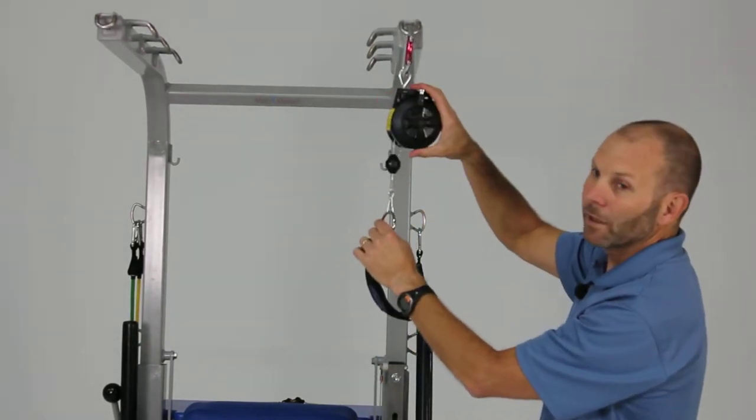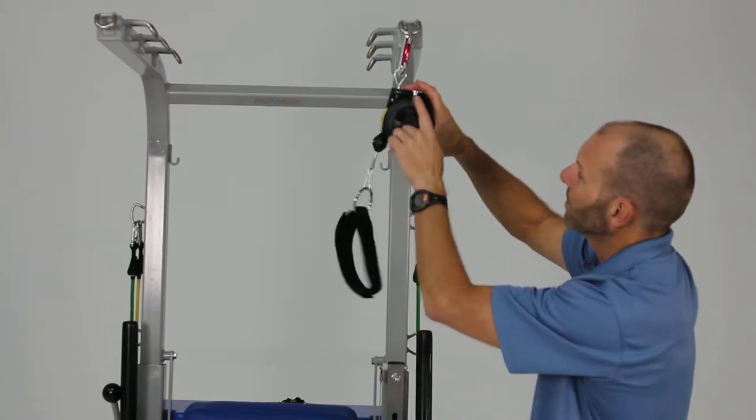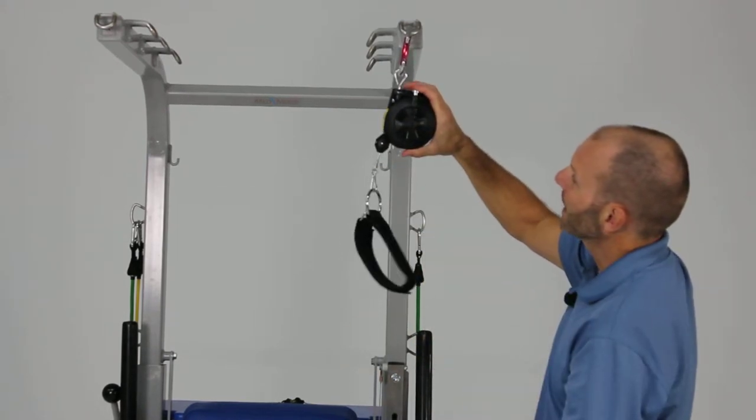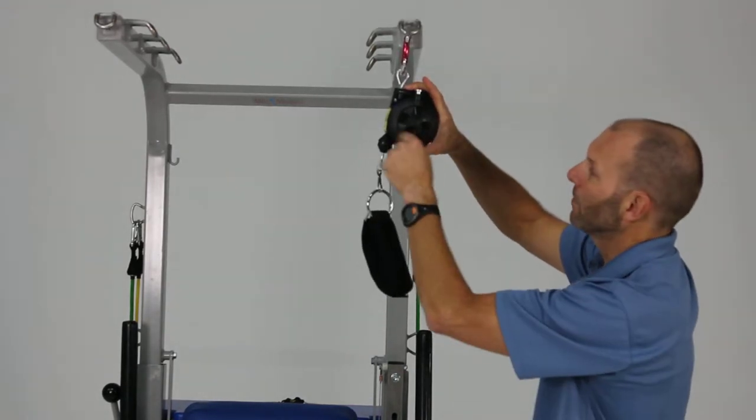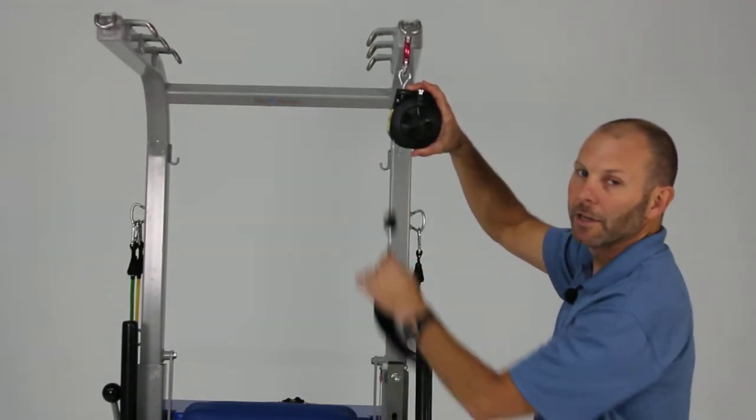If you want to reduce the amount of support or assistance, you simply press on the little silver tab button up here repeatedly, and it'll release a certain amount of tension to adjust that.